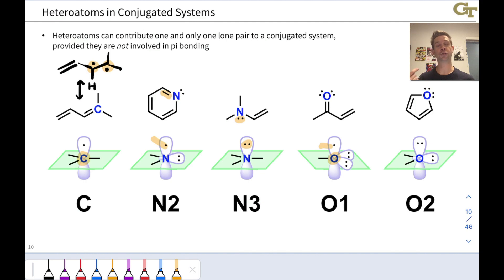The two lone pairs on that oxygen are both part of the sigma system. They're both in the plane of the carbonyl group here in green. And so they're not delocalized, they don't participate in resonance. They're free to be given away to an electrophile or a Bronsted acid. They're not engaged in conjugation whatsoever.